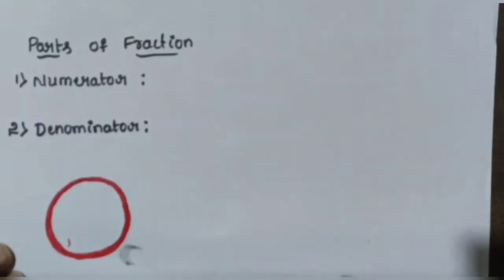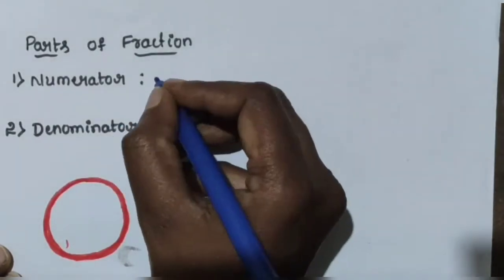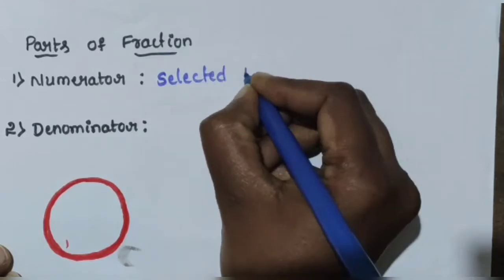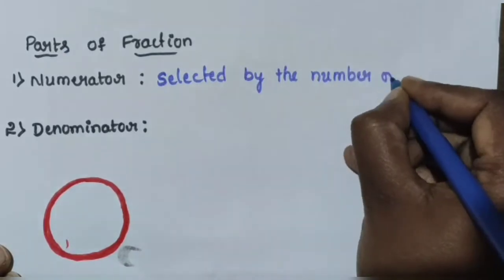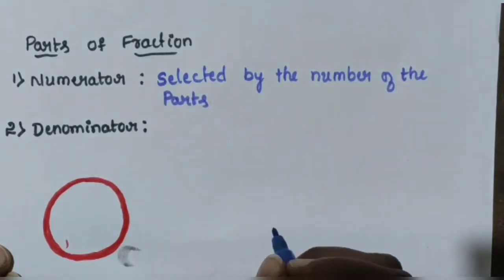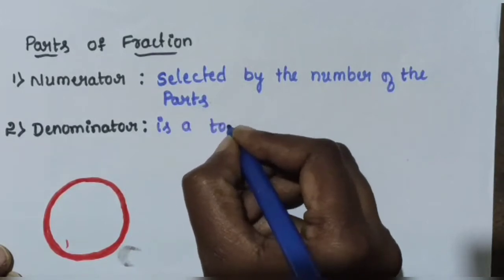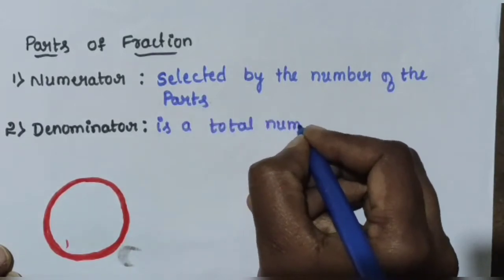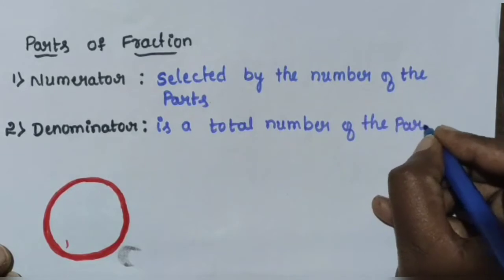Next, parts of a fraction. A fraction consists of two parts. One is the numerator and another one is the denominator. The numerator is the selected number of parts, and the denominator is the total number of parts.